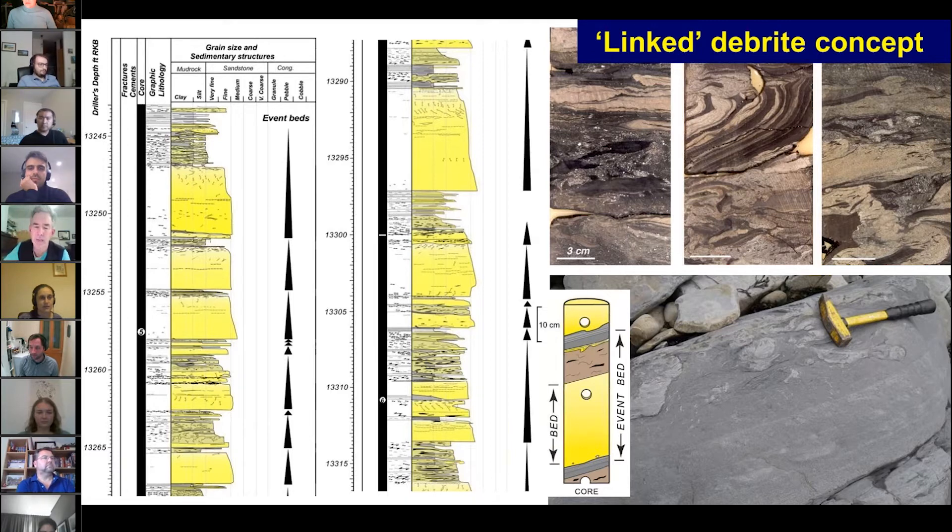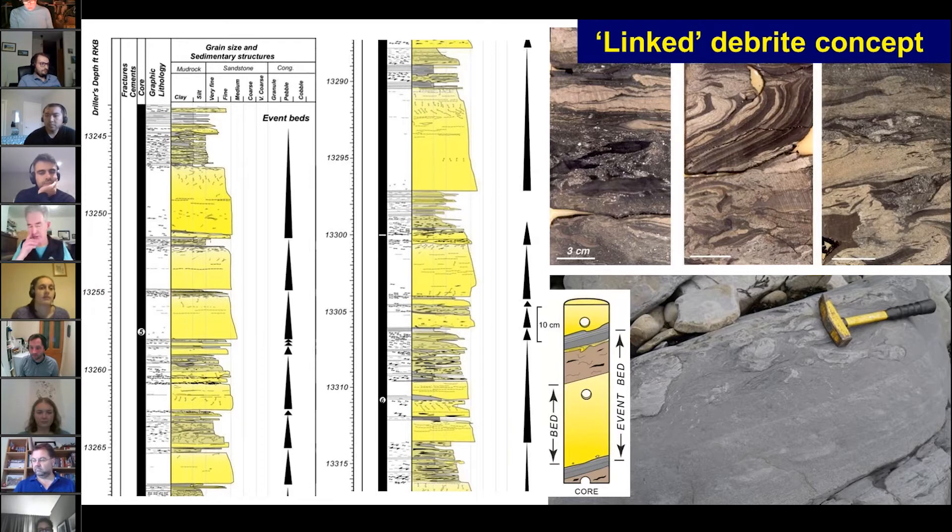The breakthrough came through recognizing event beds and the fact that the debris flows were actually linked to the sands. So we called them initially linked debrite to make that point. The idea was that sand-bearing flows were acquiring, through erosion, a lot of mud clasts and mud, and that this was forcing distal flow transformations from more turbulent currents into laminar debris flows. That was the origin of the linked debrite.